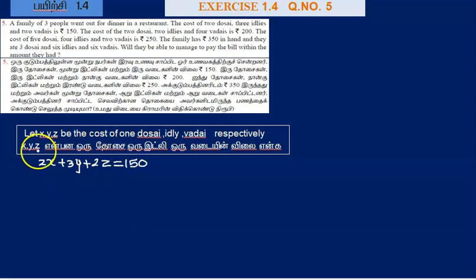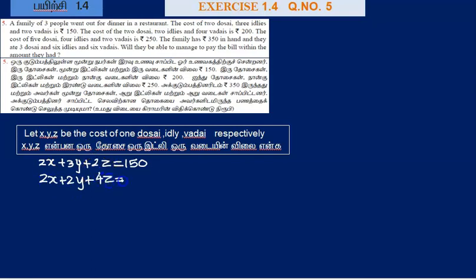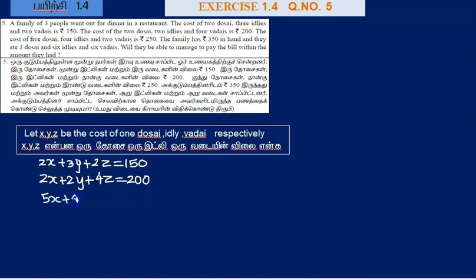Second equation: cost of 2 dosa, 2 idli, 4 vada — that is 2x plus 2y plus 4z. Third equation: 5 dosa, 4 idli, 2 vada, equals 250 rupees.